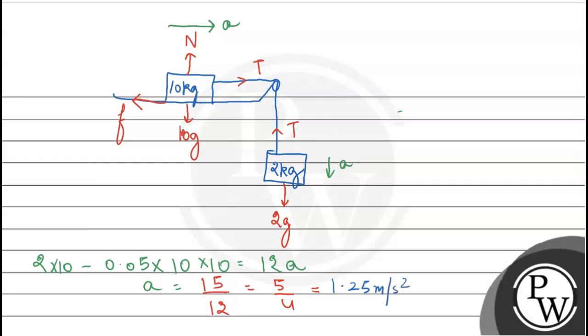The final answer is the acceleration of the block is 1.25 m/s², which is option D. Hope you understood it well. Best of luck.